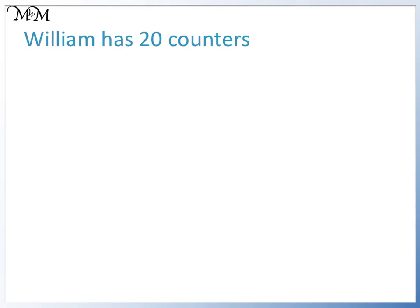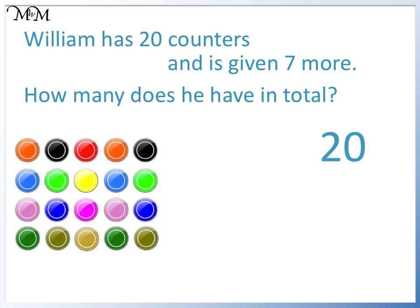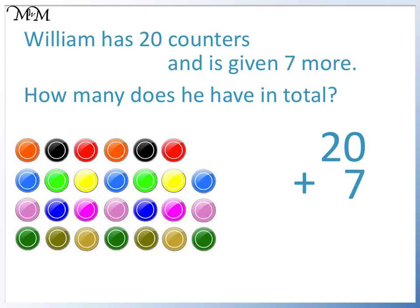William has 20 counters and is given 7 more. How many does he have in total? Finding a total means to add these numbers together. He has 20 counters and we add 7 more. The word total tells us to add these numbers. 0 plus 7 equals 7 and we have 2 in the tens column. There are 27 counters in total.